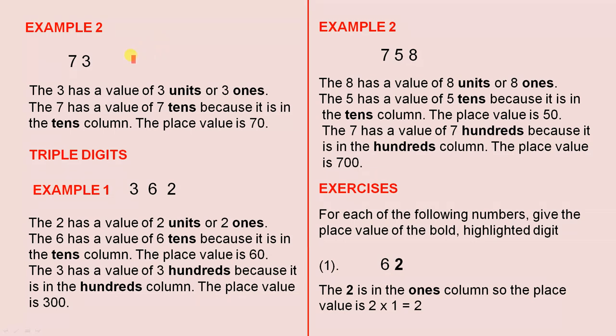Example 2: 73. The 3 has a value of three units, or three ones, because it is in the units or the ones column. The 7 has a value of seven tens, because it is in the tens column. The place value is 70. Seven tens are 70.